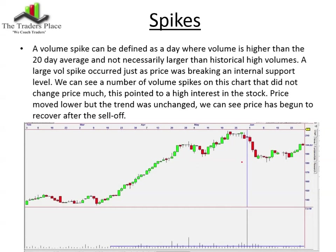A volume spike can be defined as a day where the volume is higher than the 20-day average and not necessarily the largest spike in history. A large volume spike occurred just as price was breaking an internal support level, and we had this massive volume spike — 7.5 million shares traded. We can see in history there were a couple of volume spikes where the price never really changed direction. It certainly showed interest in this particular stock. The price moved lower after the break, but it doesn't change trend. Volume doesn't necessarily change trend — it changes short-term momentum more than anything else, which is why I don't use it as an indicator on its own.